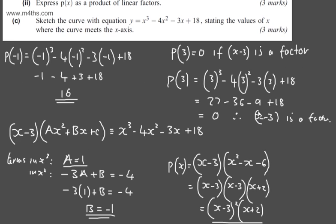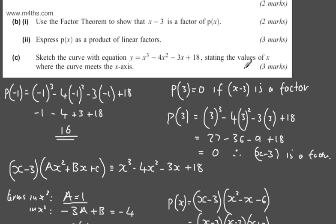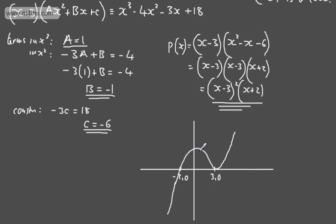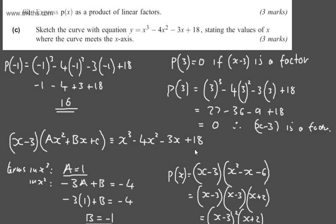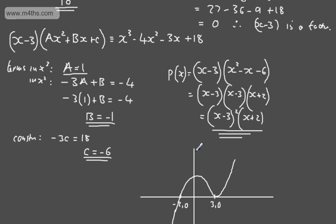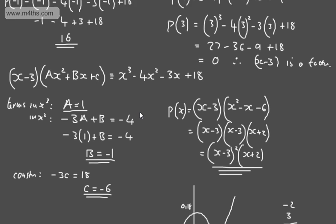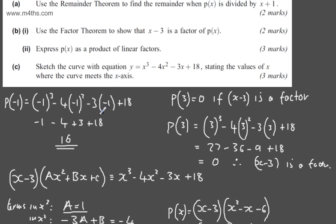We're asked to state the values of x where the curve meets the x-axis. We're not asked for the y-intercept — that's when x = 0, giving the point (0, 18) — so we can leave it. The points where the curve meets the x-axis are x = -2 and x = 3.